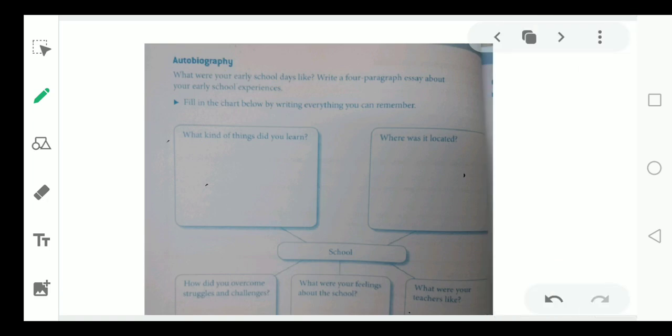Now, we are going to learn about autobiography. Here you are going to write your autobiography about your early days school experience. Fill in the chart below by writing everything you can remember. Here you have been given a very precise diagram of how you are going to make the sequence of your essay. What kind of things you learned there? First of all, you learned there was cooperation, how to make new friends and about different subjects.